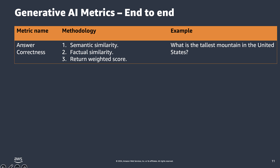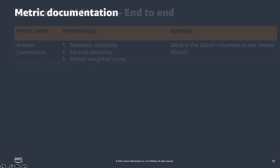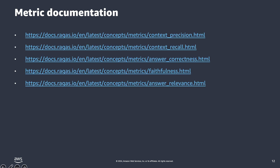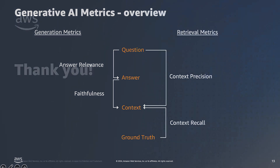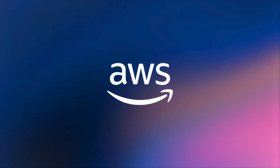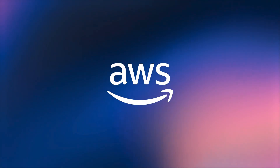To read more about the Ragas implementation of any of the metrics we have covered, please refer to the documentation listed here. In conclusion, we have covered the metrics needed to evaluate an LLM system end-to-end: the generation metrics answer relevance and faithfulness, the retrieval metrics context precision and context recall, and the end-to-end metric answer correctness. Now I'm going to hand it over to Felix to go over the hands-on implementation. Thank you so much for your attention.